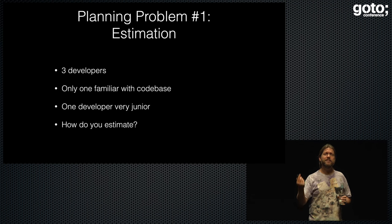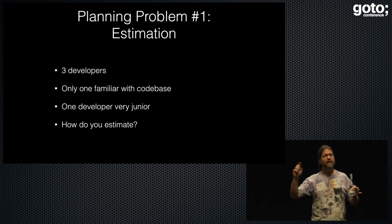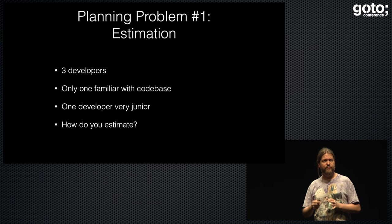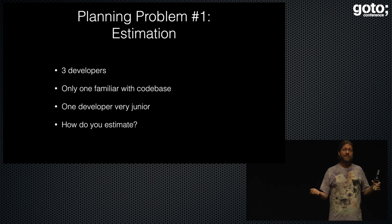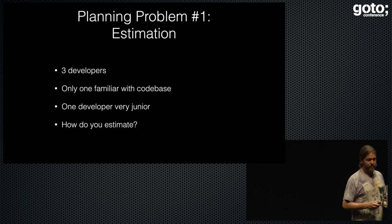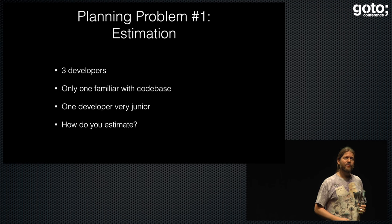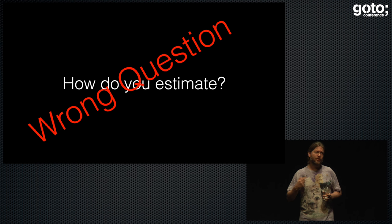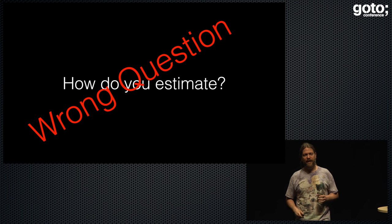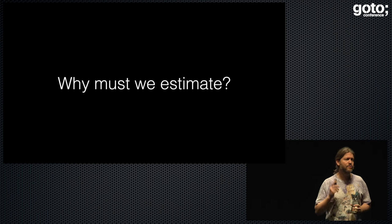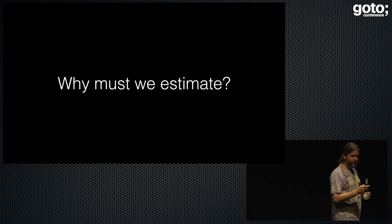This brings up the question of how do you estimate when you have this context. I'm not going to get into the whole no-estimates argument. It's really that when you're in a context, people are often asking you that question. But what I sat down and told all the stakeholders was: this is the wrong question. It's not that estimation is the wrong thing to do, but 'how are we going to estimate' is the wrong question. The right question is: why would we estimate? What value do you actually get out of this?